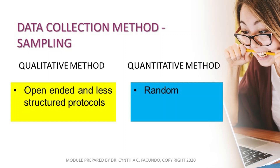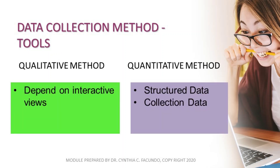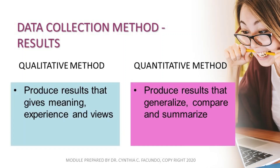Under data collection method or sampling, there is a difference between qualitative and quantitative methods. In a qualitative method, it uses open-ended and less structured protocols, while in quantitative it is random. Under qualitative method, it depends on interactive use, while in quantitative it is based on structured data and data collection.